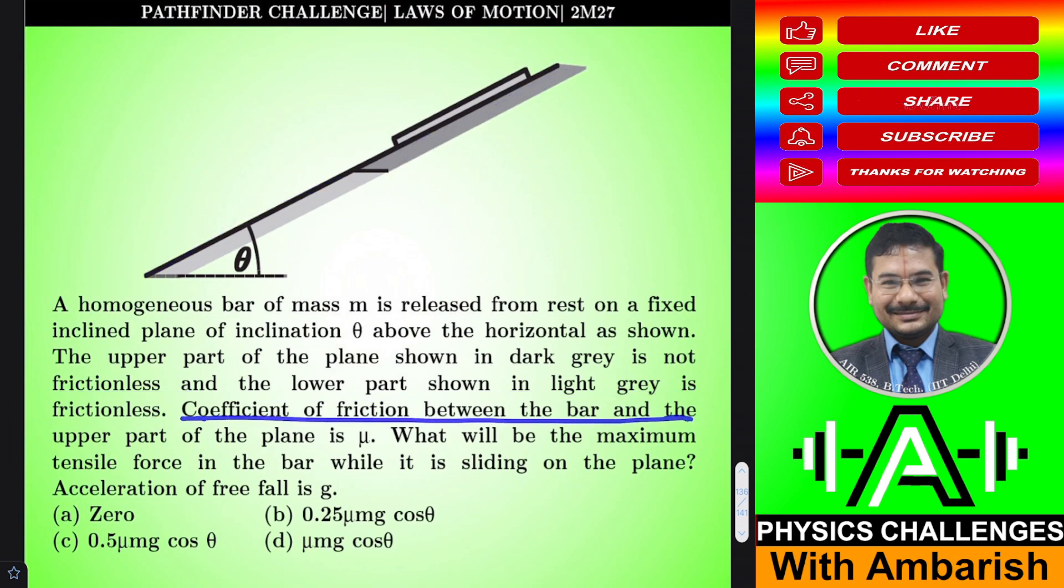Coefficient of friction between the bar and the upper part of the plane is mu. What will be the maximum tensile force in the bar while it is sliding on the inclined plane? Acceleration of free fall is g. The options are 0, 0.25 mu mg cos theta, 0.5 mu mg cos theta, and mu mg cos theta. If you want, you can give it a try.